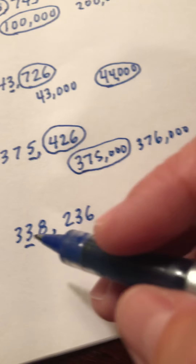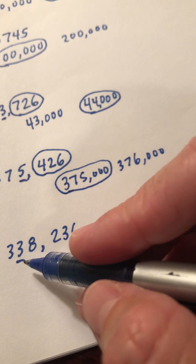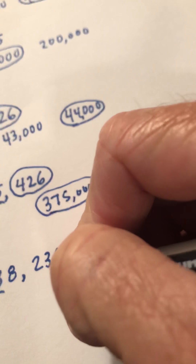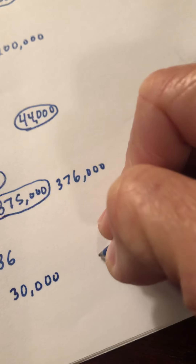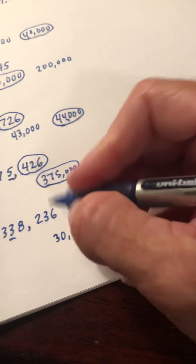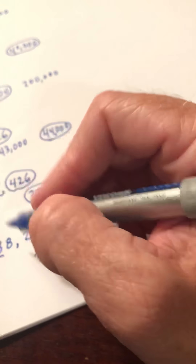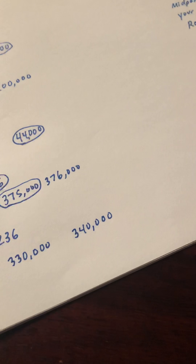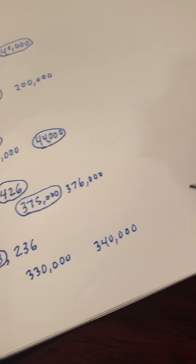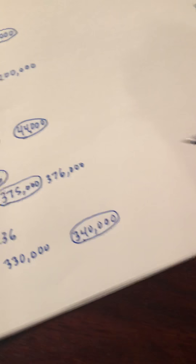My last example is a number in the hundred thousands where we are rounding to the nearest ten thousand. Skip counting by tens of thousands: ten, twenty, thirty, forty, fifty, sixty thousand, and so on. Some students like to think of it as between thirty thousand and forty thousand, but it's not — it's a much larger number. It's really between three hundred thirty thousand and three hundred forty thousand. The midway point is three hundred thirty-five thousand. Looking at the rest of the number, thirty-eight thousand is above three hundred thirty-five thousand, so that rounds up to three hundred forty thousand.